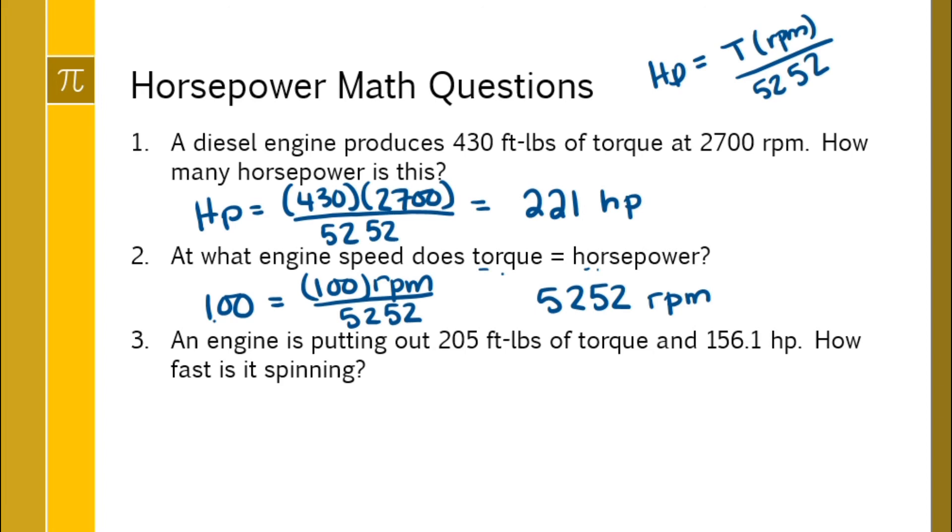Question 3. We've got 205 foot pounds of torque and we know the horsepower and we want to solve for the RPMs. So let's build that formula.